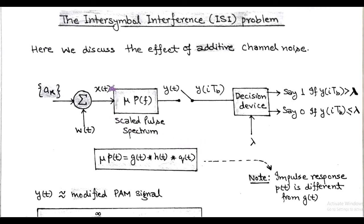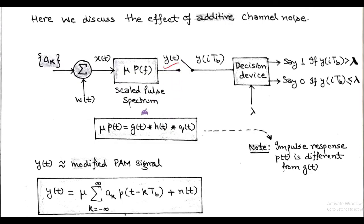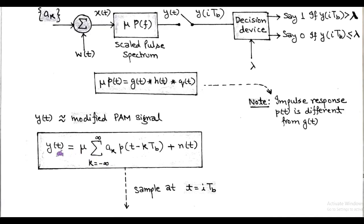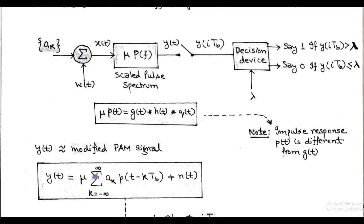Here, the input signal x(t) is the combination of the line encoded signal a_k and the Gaussian additive noise denoted by w(t). So, this simplified baseband transmission system produces a modified PAM signal y(t) = μ · Σ a_k · p(t − k·T_b) + n(t), taking the sum from k = −∞ to +∞. Here n(t) is called filtered noise.